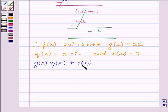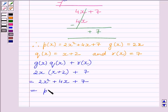Substituting their corresponding values, we get 2x multiplied by x plus 2 plus 7, which is equal to 2x squared plus 4x plus 7, which is equal to the value of Px.